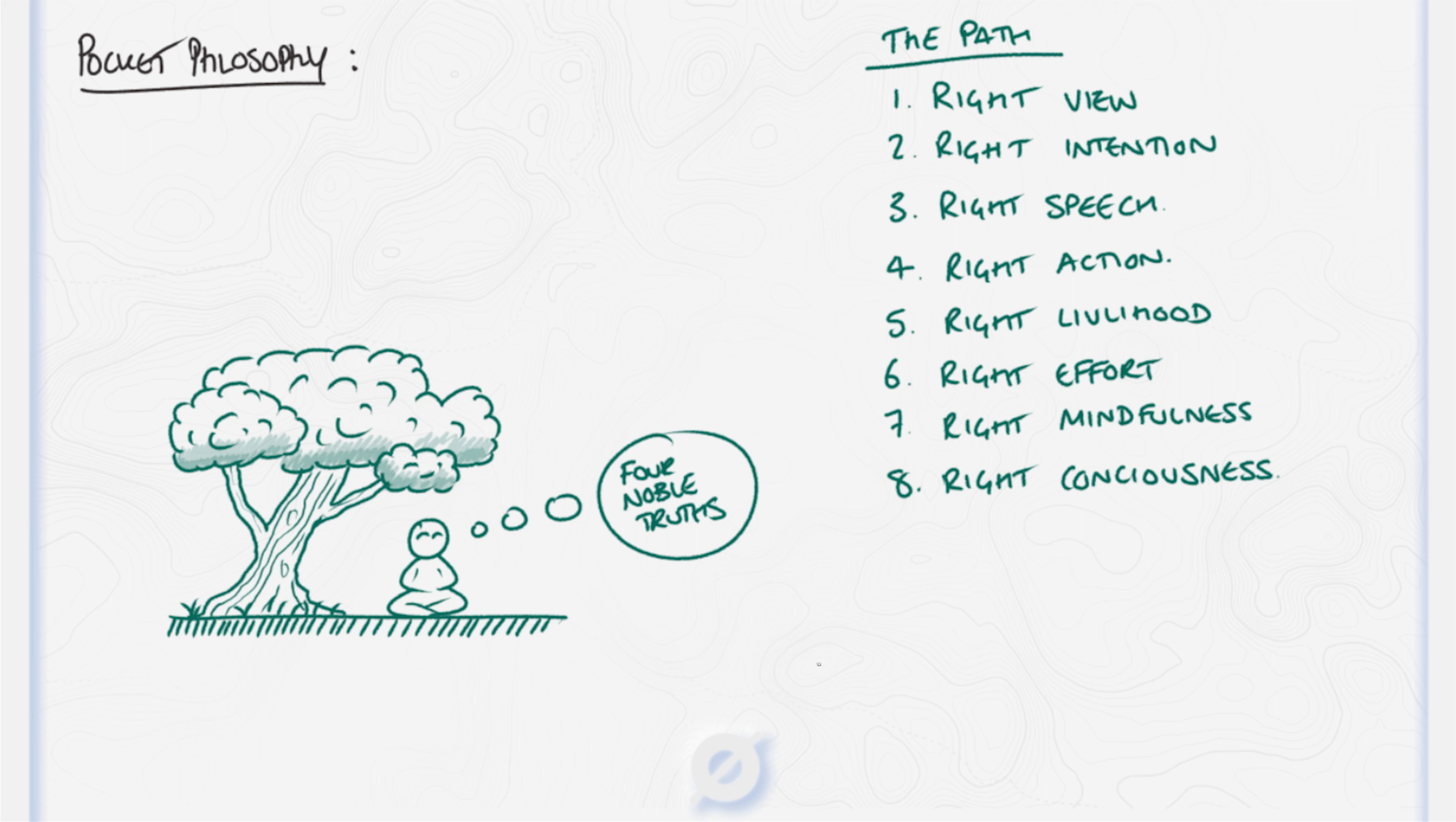Right livelihood. No trading in weapons, living beings, meat, liquor, and poisons. Right effort. This is making an effort to prevent the arising of unwholesome states, and generating wholesome states.